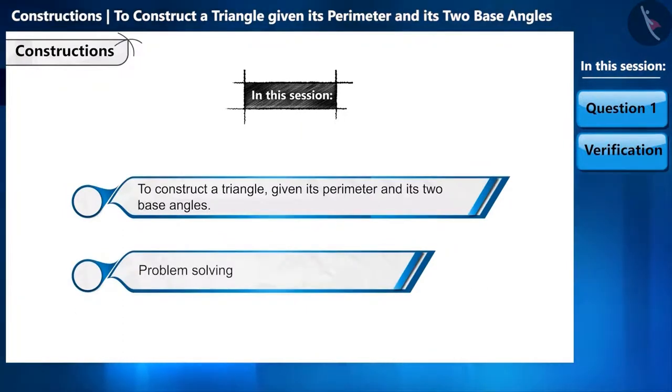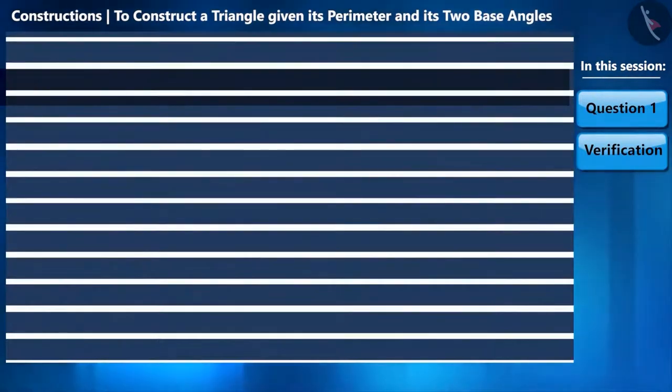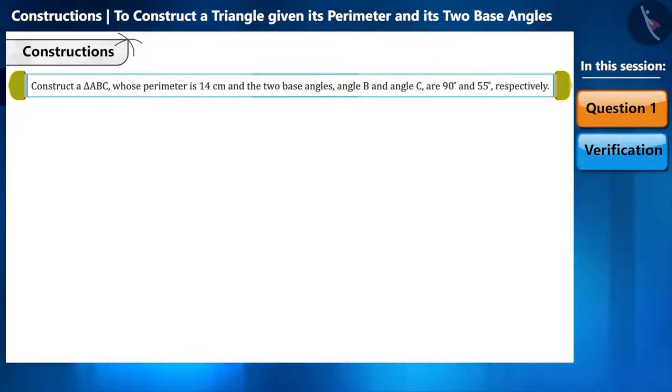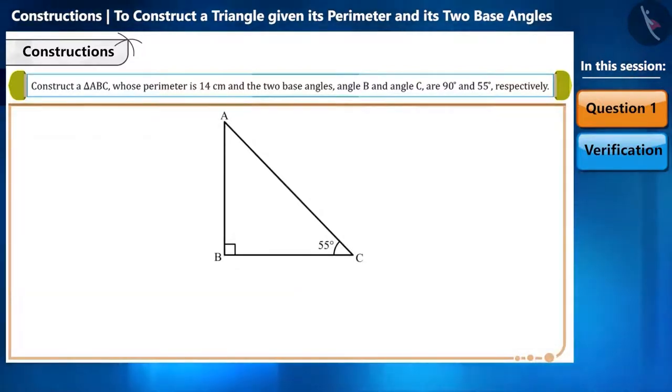In this session we will learn to solve questions based on this construction. Let's start with a question: construct a triangle ABC whose perimeter is 14 centimeter and the two base angles, angle B and angle C, are 90 degrees and 55 degrees respectively.